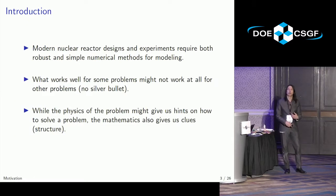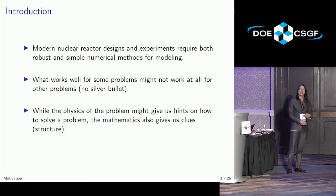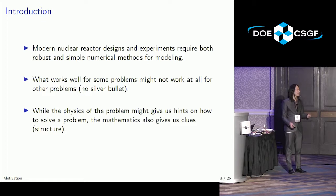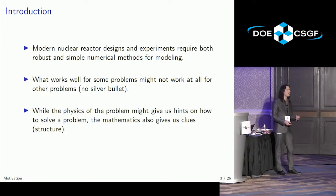Modern nuclear reactor designs and experiments require both robust and simple numerical methods for modeling. When I say robust and simple, you might immediately think if it's robust, it can't be that simple. And if it's simple, it can't be all that robust. But that's the gold standard for our methods. The other issue is what works well for some problems might not work at all for other problems. There is no silver bullet in algorithms and mathematical methods.